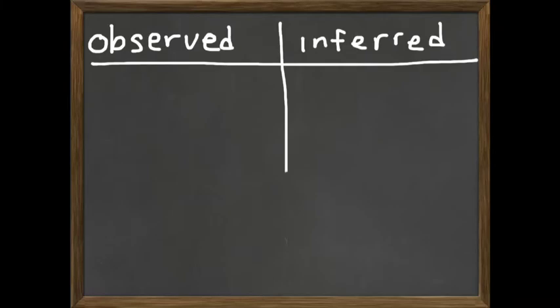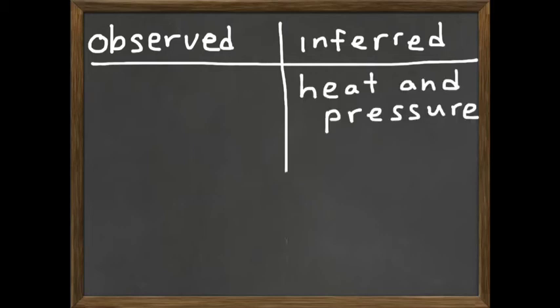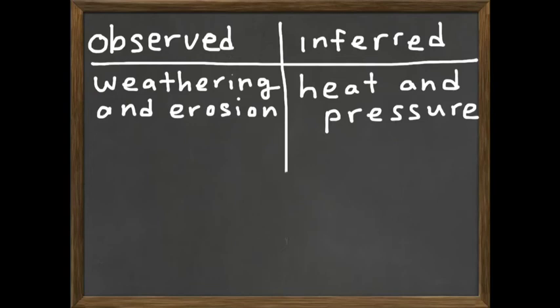To help summarize and remember the differences between observed characteristics and properties and inferred characteristics and properties, observed properties are different from inferred properties because inferred properties you can't actually see. For example, heat and pressure — can you see heat and pressure? The answer is no, because we would find it really deep under the earth in a place that would be difficult or impossible to experience.